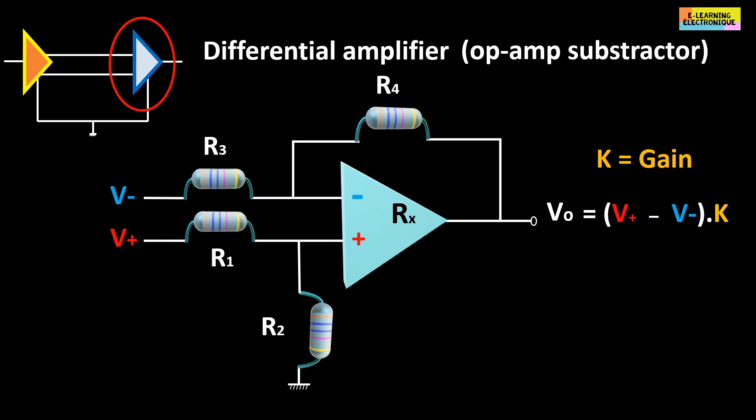If we don't want to amplify the signal, we have to fix the gain at one. For this, the four resistors of the assembly must have the same value. The final formula will then be VO equals V+ minus V-.